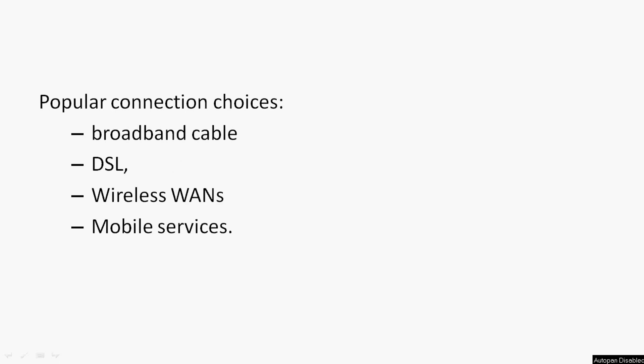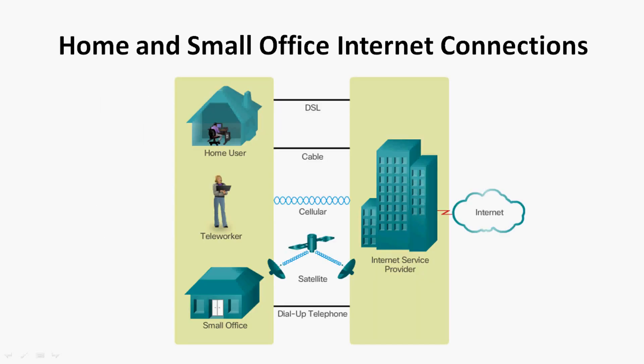Here we can see popular connection choices available such as broadband cable, DSL, wireless WANs, mobile services, etc. Now we will see the different internet connections for home and small office, such as DSL, cable, cellular, satellite, and dial-up telephone. We will see these connections one by one.